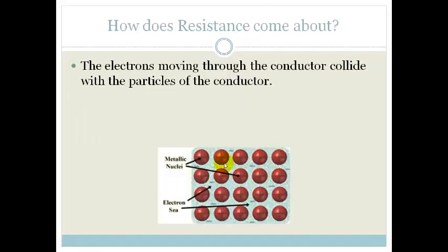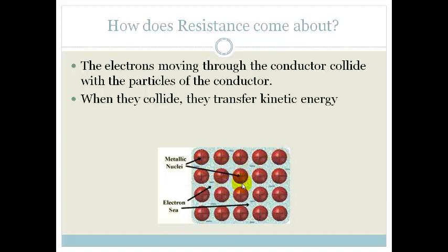So how does resistance come about? If you look at this little picture, we know that metals are made up of nuclei with a sea of delocalized electrons, but now as the electrons are moving through the conductor, they collide with the particles in the conductor. When they collide, they transfer kinetic energy, and the electrons therefore slow down. So that is what happens with resistance.